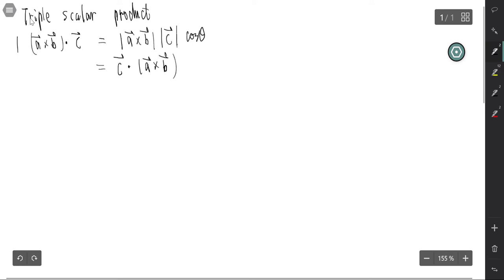In coordinates, the triple scalar product can be written as a determinant with components A1, A2, A3, B1, B2, B3, and C1, C2, C3.